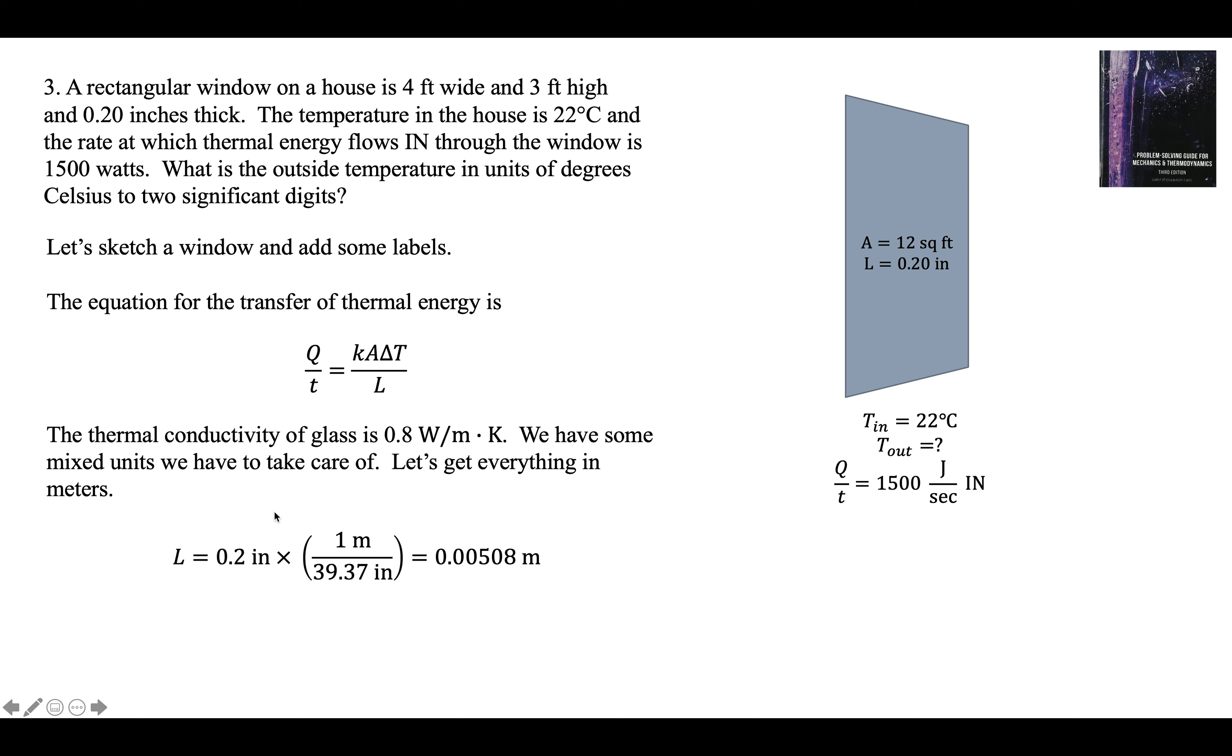So we have the thickness of the window is 0.2 inches. There's 39.37 inches in the meter. We get the thickness of the window in meters. And we get the area, 12 square feet, in units of square meters, like that.